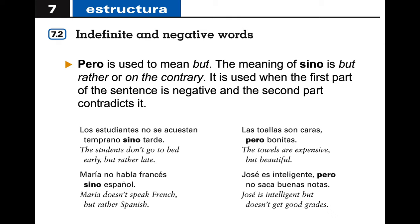The word 'sino' is used to express 'on the contrary' or 'but rather.' It is used when the first part of the sentence is negative and the second part contradicts it — for example, 'the students go to bed early, but rather late.' If I say 'the towels are expensive, but beautiful,' there's no negative in the first part, so I use 'pero.' The key is whether the first part is negative and the second part contradicts it.